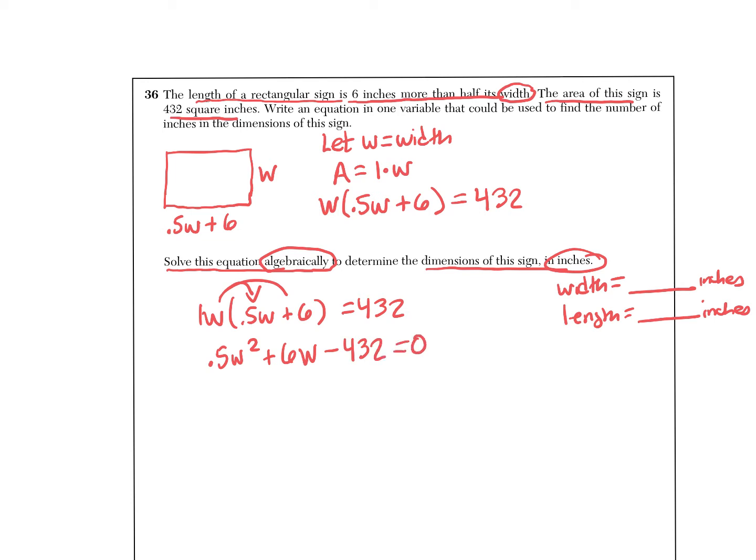So I have a couple of choices. I can factor and use ZPP, or I could go right to the quadratic formula. Remember the quadratic formula is right on your reference sheet. A lot of students have it memorized, but you don't have to: negative b plus or minus the square root of b squared minus 4ac all over 2a. Even if you have it memorized, double check it.